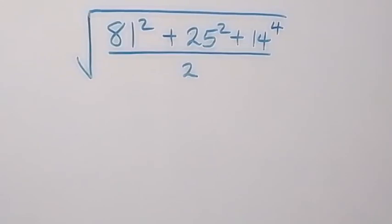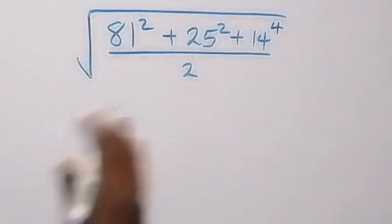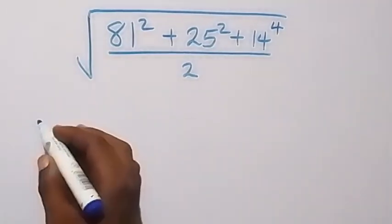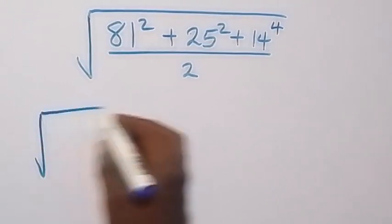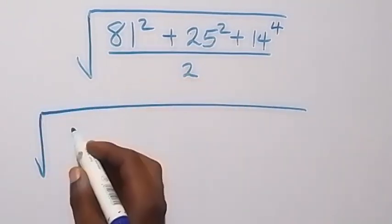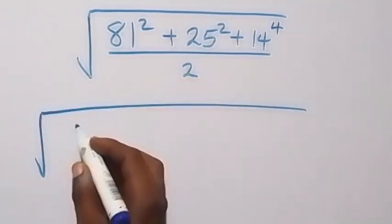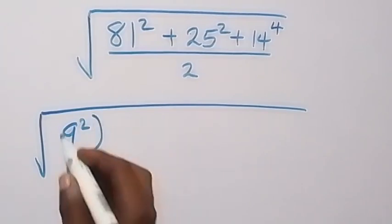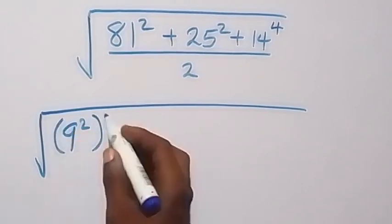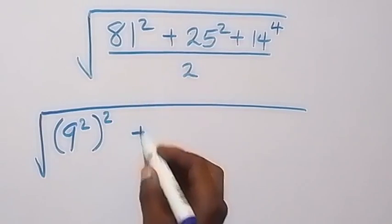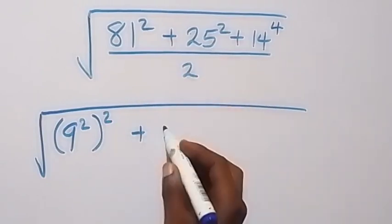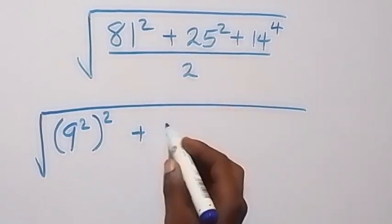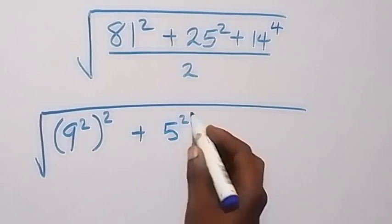Hello, welcome. How to solve this square root math problem. Here we write what we have: square root of 81, which we can write as 9 squared, then squared, plus 25, which we can write as 5 squared.